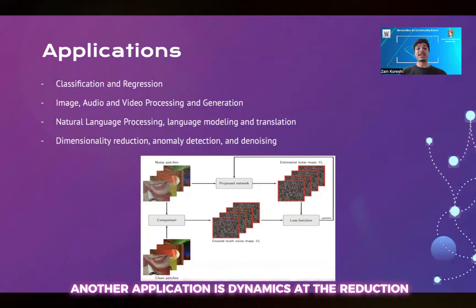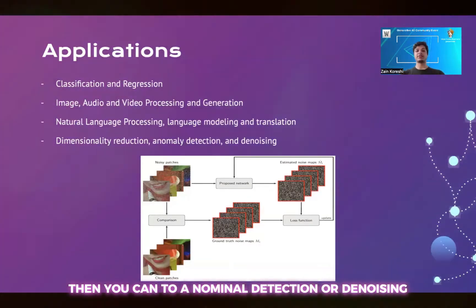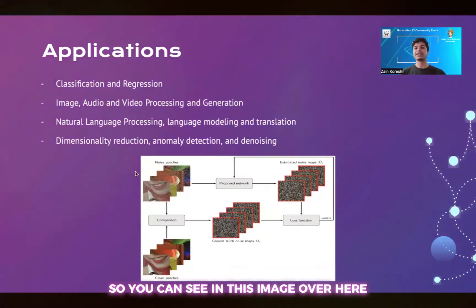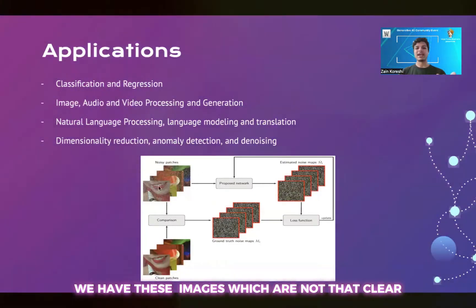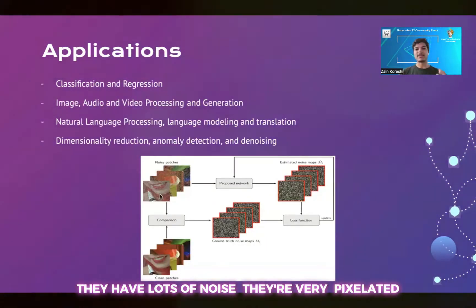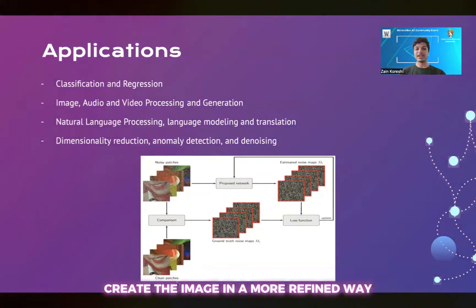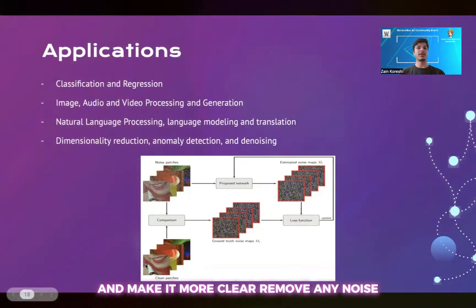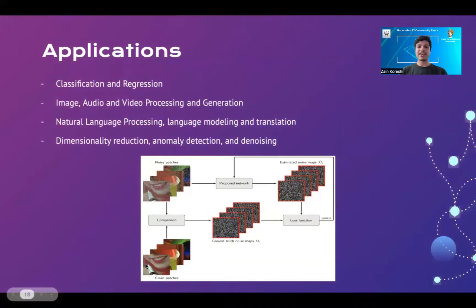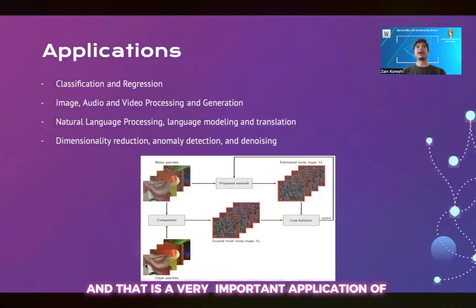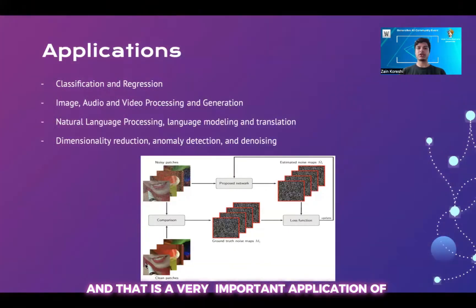Another application is dimensionality reduction, where you can do anomaly detection or denoising. As you can see in this image, we have images that are not very clear — they have lots of noise and are very pixelated. You can use a neural network to recreate the image in a more refined way, make it clearer, and remove any noise. That is a very important application of neural networks.